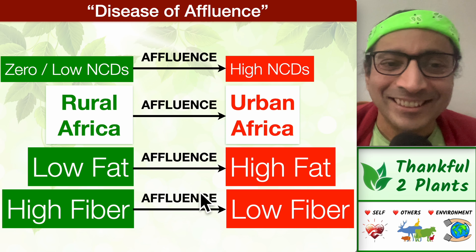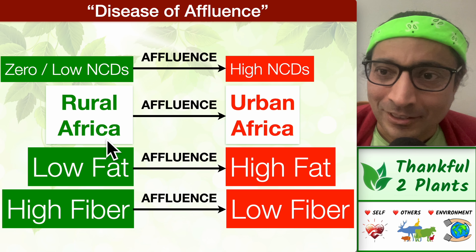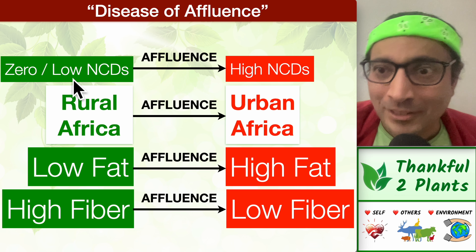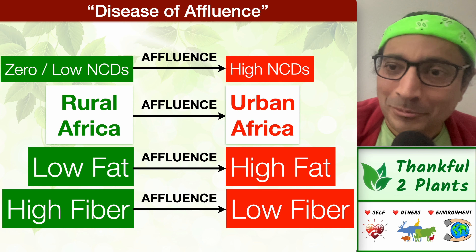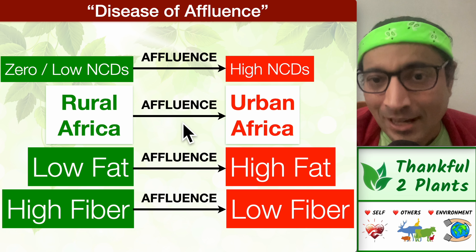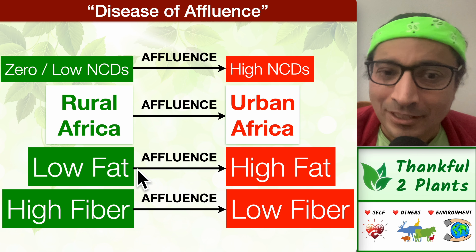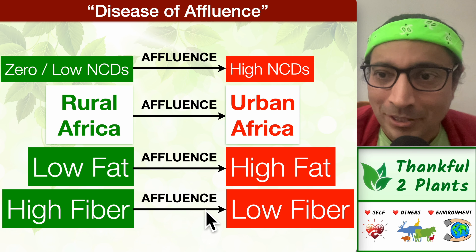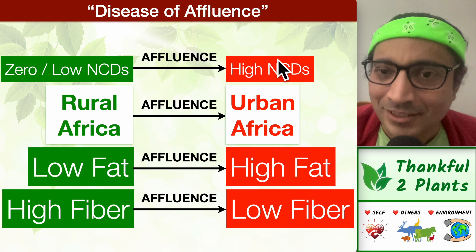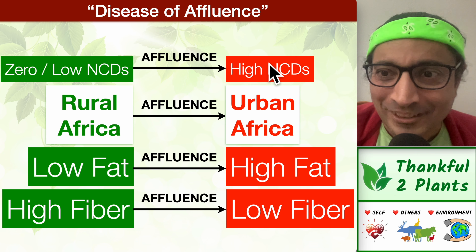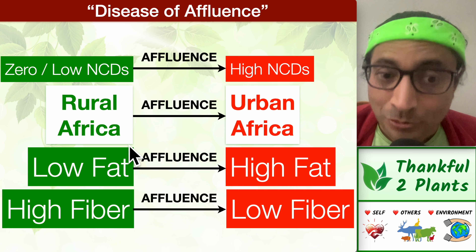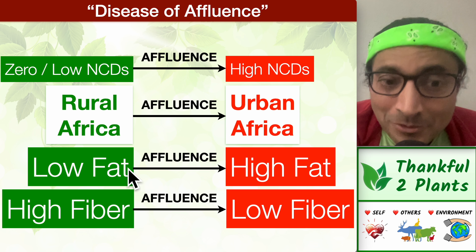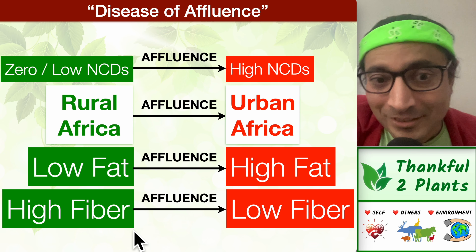They are saying that in rural Africa, many parts have zero or near-zero heart disease, which is also true for many non-communicable diseases. As urbanization happens, NCDs are going up and the food system, because of affluence, is becoming high-fat and low-fiber. But as we urbanize and modernize, we may choose to follow the food system we used to follow — a low-fat, high-fiber system. It's a difficult choice, but we could.